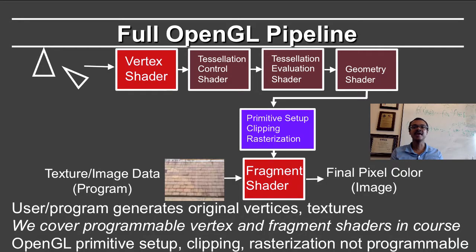Let us first look at the entire OpenGL pipeline. We start with the geometry specified by the user program. That is acted upon by a vertex shader, which we will be considering in this course, and a number of other shaders including the tessellation control shader and tessellation evaluation shader to tessellate primitives like spline patches, and a geometry shader that can generate additional geometry. Thereafter this comes to the rasterization part of OpenGL, which sets up the primitives, does some basic clipping, and does rasterization, which essentially takes the triangles and determines which pixels they should correspond to on the screen.